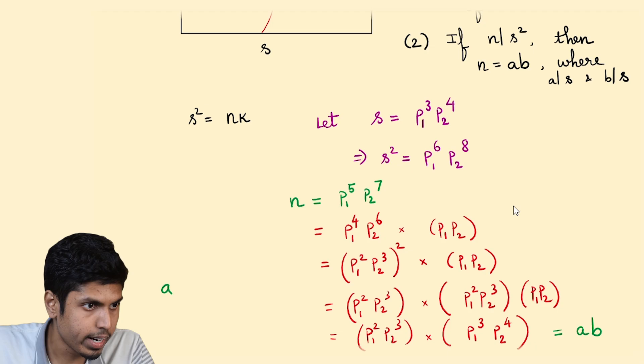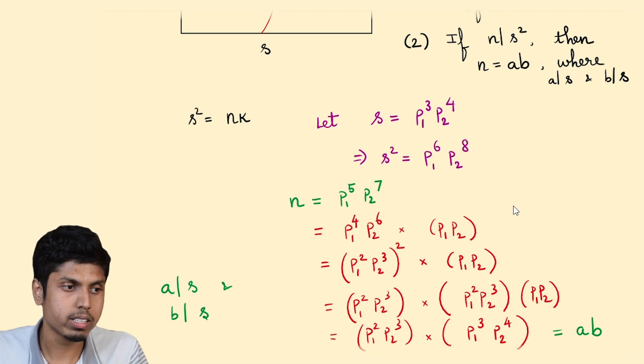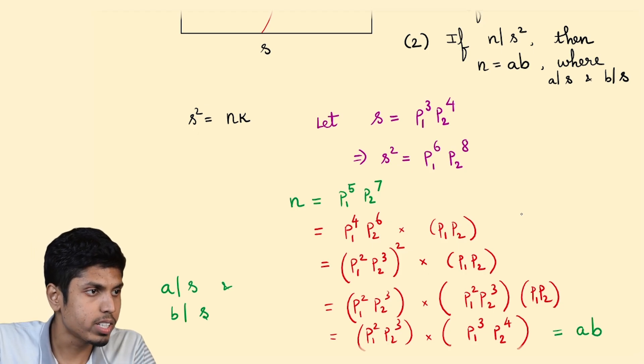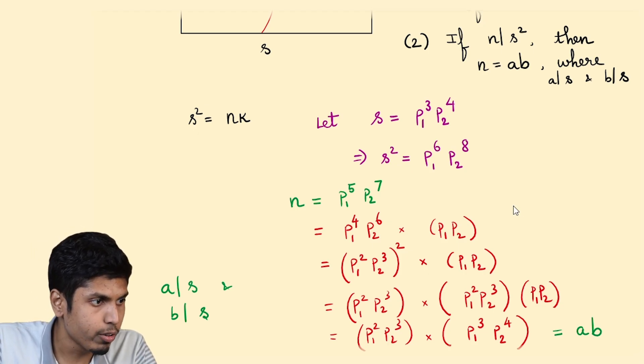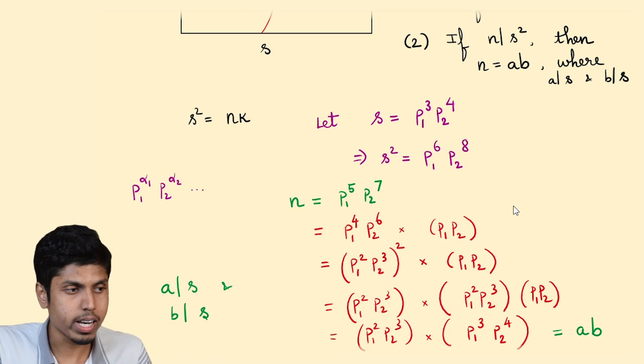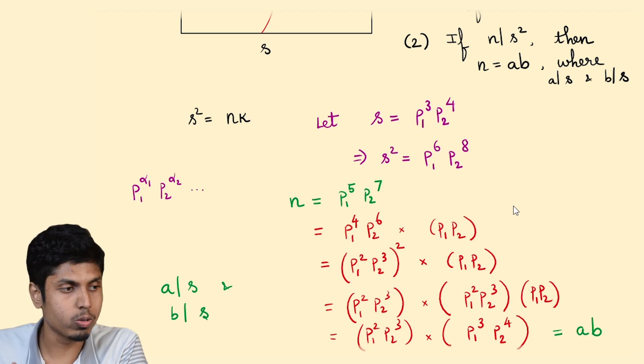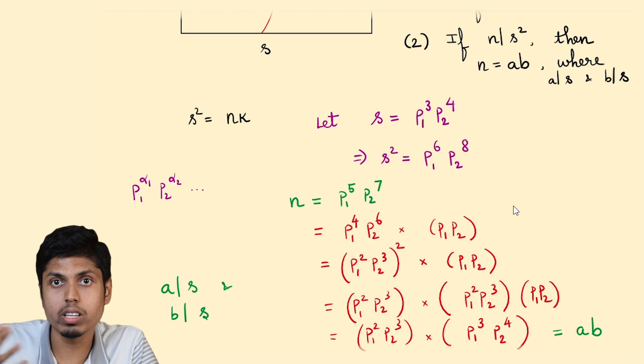So we have that A divides S and B divides S. Using this strategy, one will always get the required factors A and B. How? So the general idea goes like this. If you have the powers of primes P₁ power alpha 1, P₂ power alpha 2 and so on, first segregate the even powers to one side and the remainder, which will be odd, to the other side. If the exponent is odd, the remainder will be odd. If it's even, then the remainder will be 0.